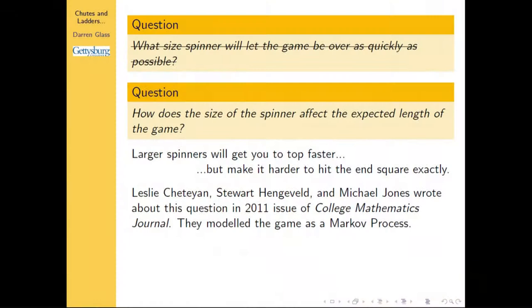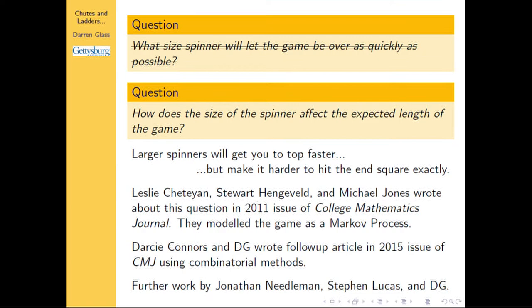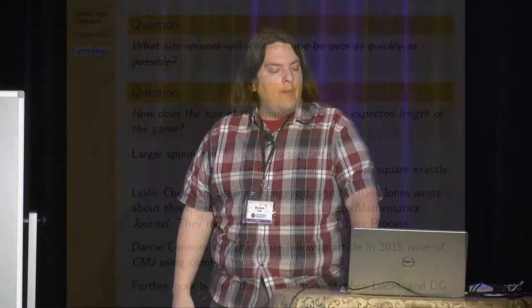This question, and variations on it, were first considered in the literature — as far as I know — in the 2011 issue of the College Mathematics Journal by several authors. They modeled the game as a Markov process, got into a 101 by 101 matrix, and did all kinds of interesting mathematics. Then one of my undergraduate students and I wrote a follow-up article in the CMJ using combinatorial methods instead. I also gave a talk at the MOVES conference, and Jonathan Needleman and Steven Lucas asked questions that we turned into a further paper.